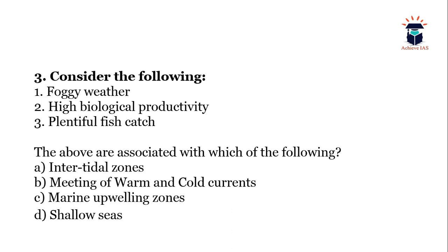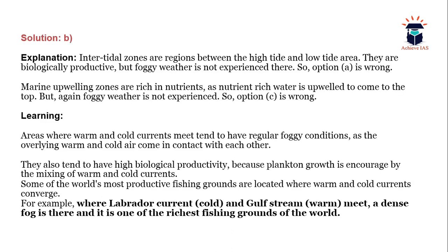Next question: Consider the following — 1) Foggy weather, 2) High biological productivity, 3) Plentiful fish catch. The above are associated with which of the following? A) Intertidal zones, B) Meeting of warm and cold currents, C) Marine upwelling zones, D) Shallow seas. The answer is B — meeting of warm and cold currents. Intertidal zones are biologically productive but foggy weather is not experienced there. Marine upwelling zones are nutrient-rich but again foggy weather is not experienced there.